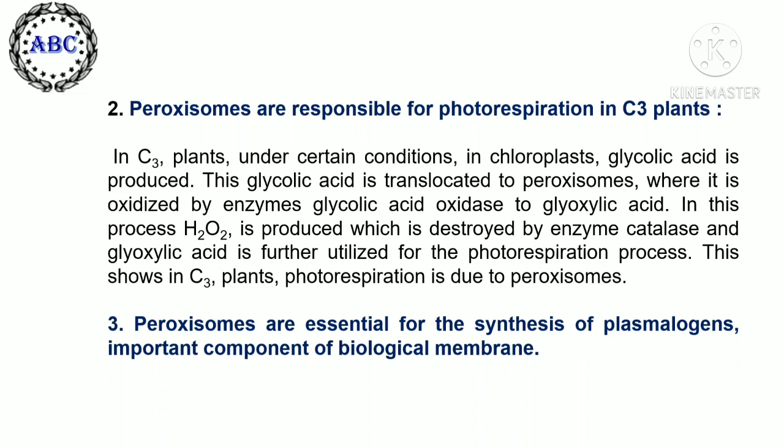The second function of peroxisomes is that they are responsible for photorespiration in C3 plants. In C3 plants, under certain conditions, glycolic acid is produced in the chloroplast. This glycolic acid is translocated to peroxisomes where it is oxidized by the enzyme glycolic acid oxidase to glyoxylic acid, producing hydrogen peroxide, which is destroyed by catalase.